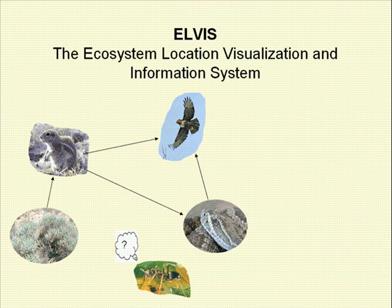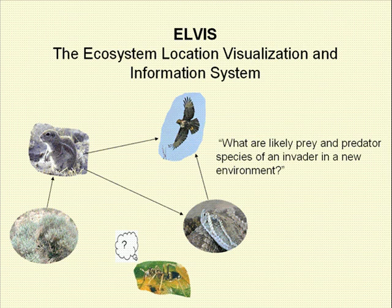Because very few ecosystems have been the subject of empirical food web studies, response teams are typically unable to get quick answers to questions like: what are the likely prey and predator species of an invader in a new environment?